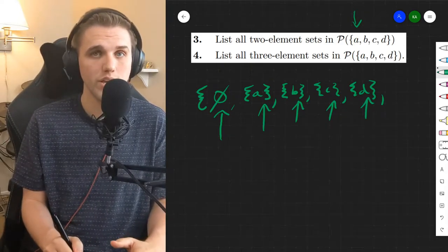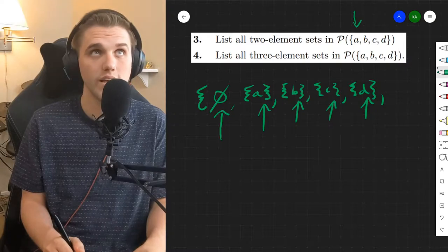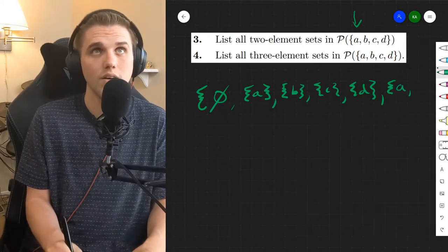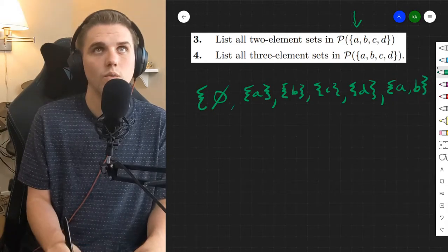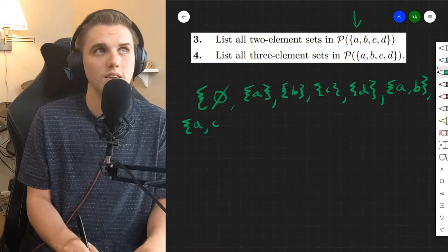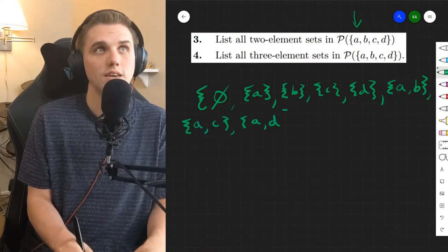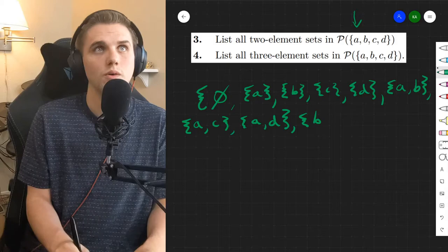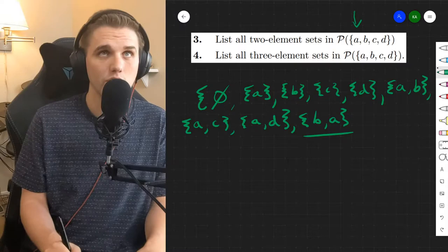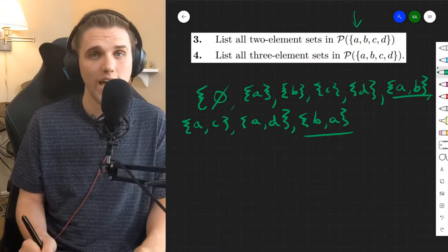And so the question for number three is, how many two-element sets are we going to have? Well, let's actually try to compute this by hand. We have A and D. We can have A and B. We can have A and C. We can have A and D. We can do B and A. But I want to talk about this real quick. We can't include this in the set because we already have.